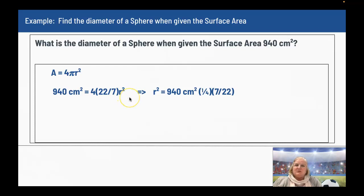So r has to equal d divided by 2. And you can solve it that way, or you can solve for r first and then plug it in to find the diameter. r squared equals 940 centimeters squared times 1/4th, the reciprocal of 4, which is 1/4th. The reciprocal of 22 over 7 is 7 over 22.